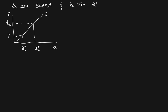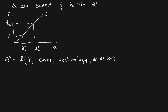Clearly, one of the things that affects quantity supplied is the price. So quantity supplied is going to be a function of price. But it's also going to depend on other things. How much sellers want to sell is also going to depend on things like the costs of production, the technology that they have available to produce the product. It's also going to depend on how many sellers you actually have in a market. The number of sellers is going to affect how many units will be bought and sold at every price. Also, we have future expectations.